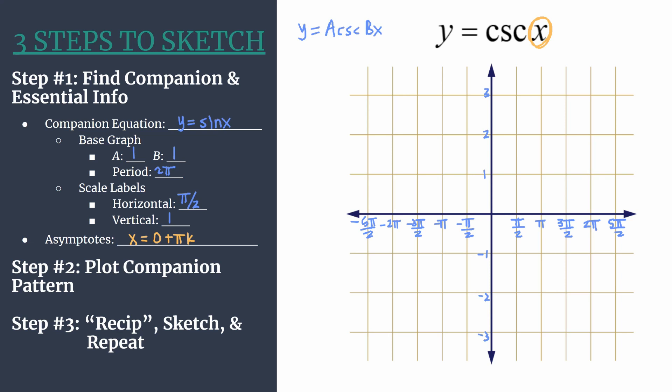Let's plot our companion pattern. We did all the analysis in step one, and all we need now is to remember what a sine pattern looks like. An unreflected sine pattern is first zero, maximum, second zero, minimum. Zero is just another way to say x-intercept. Let's lightly plot this companion pattern because we'll use this to create the reciprocal in the next step. For unshifted sine, we start at the origin, zero.